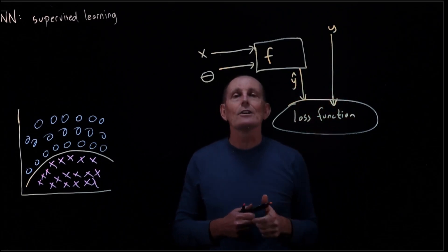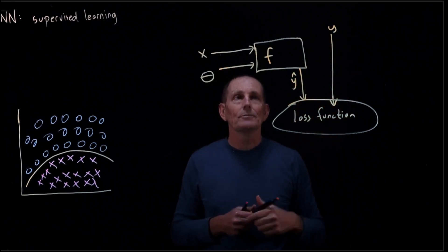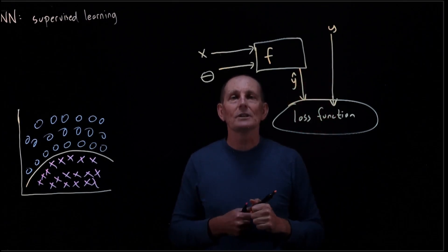If Y and Y-hat are equal, our loss should be zero. If Y and Y-hat are big, our loss should become larger. So as Y-hat differs from Y, our loss should be bigger.